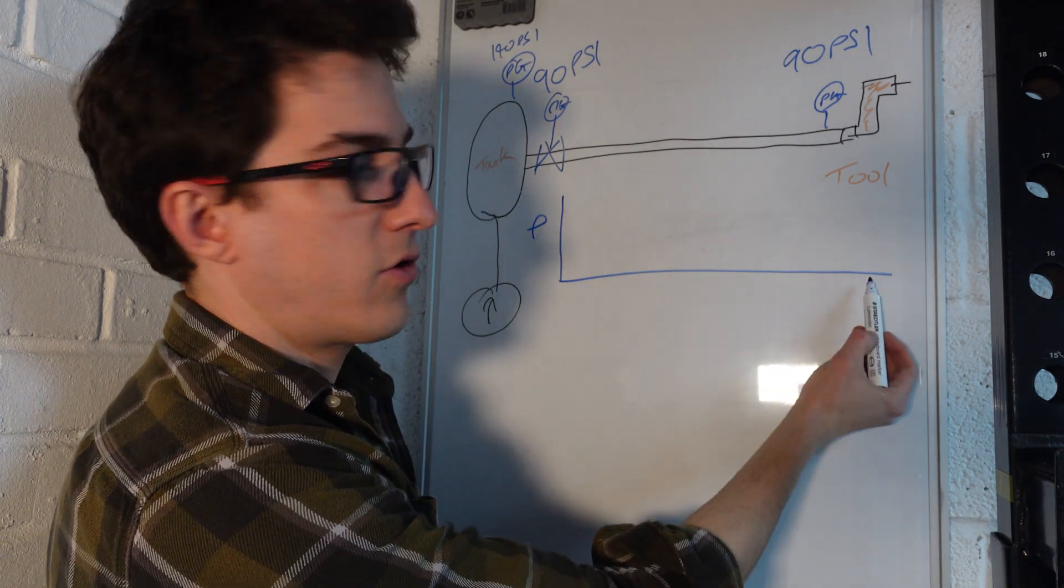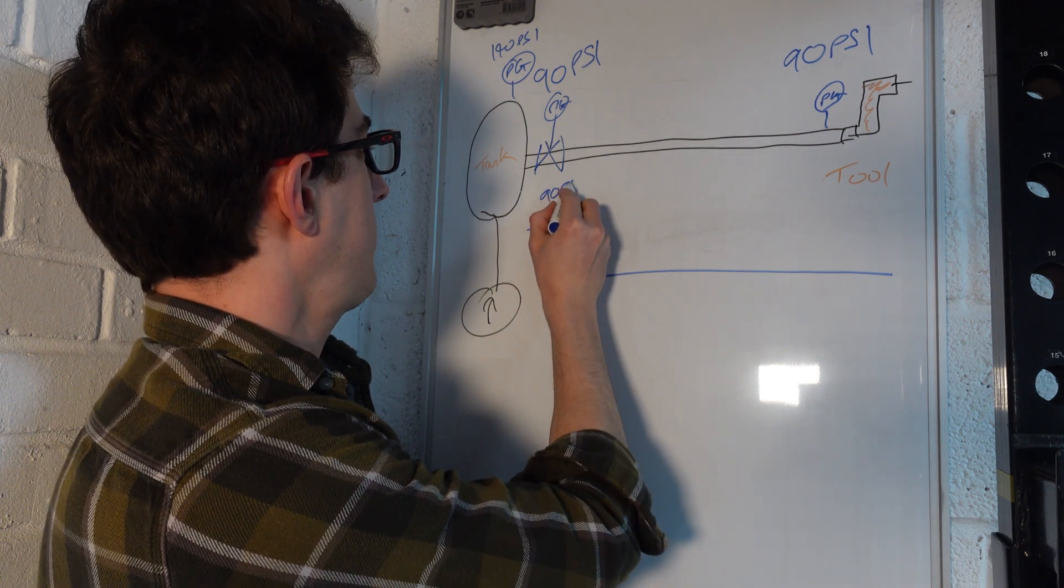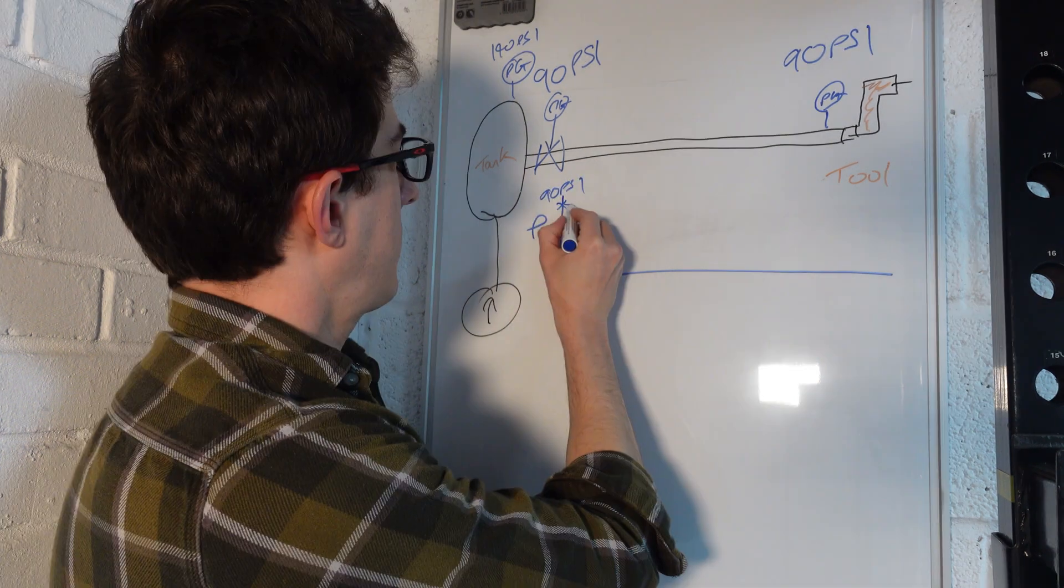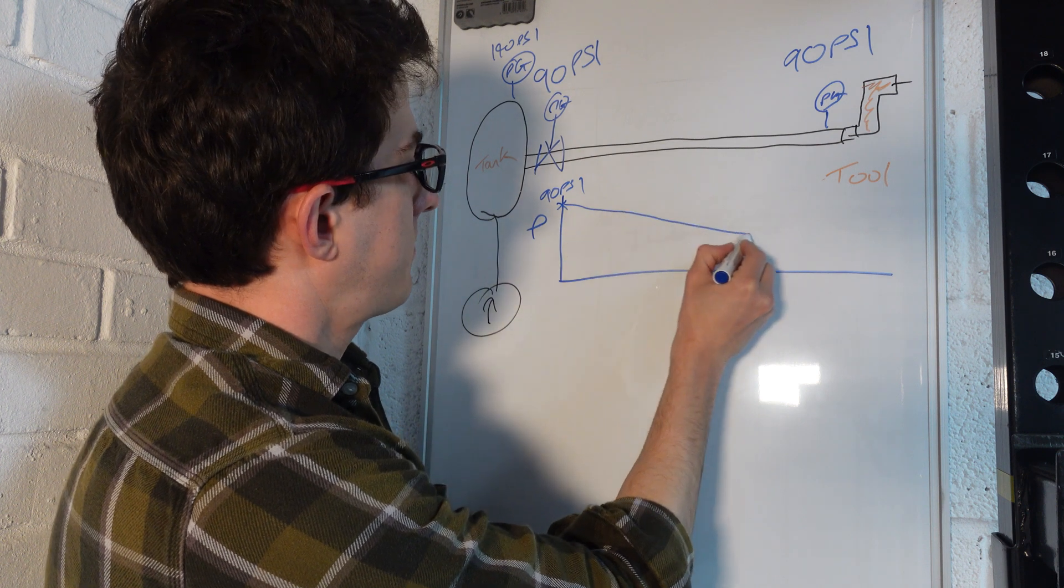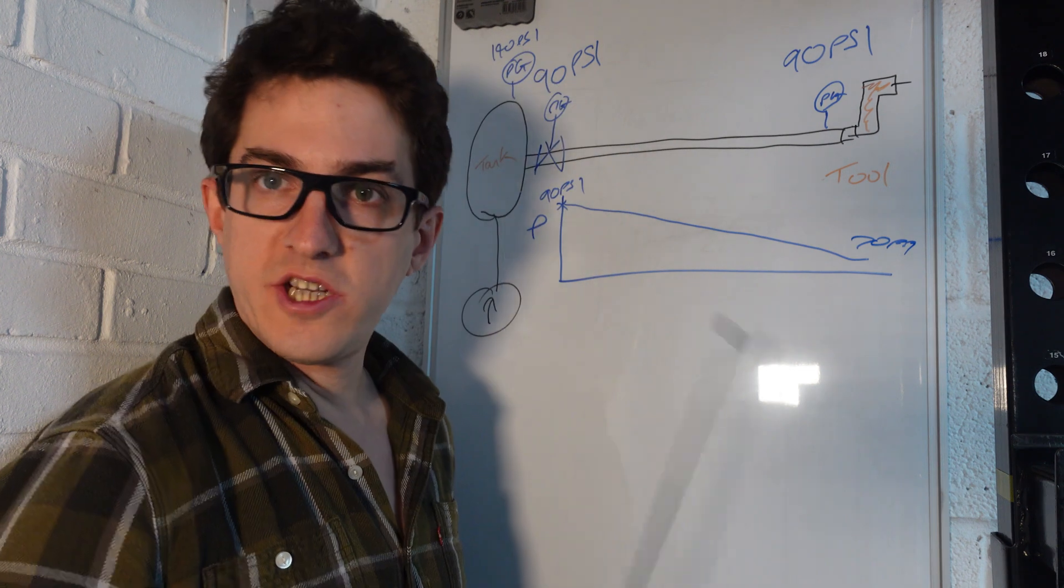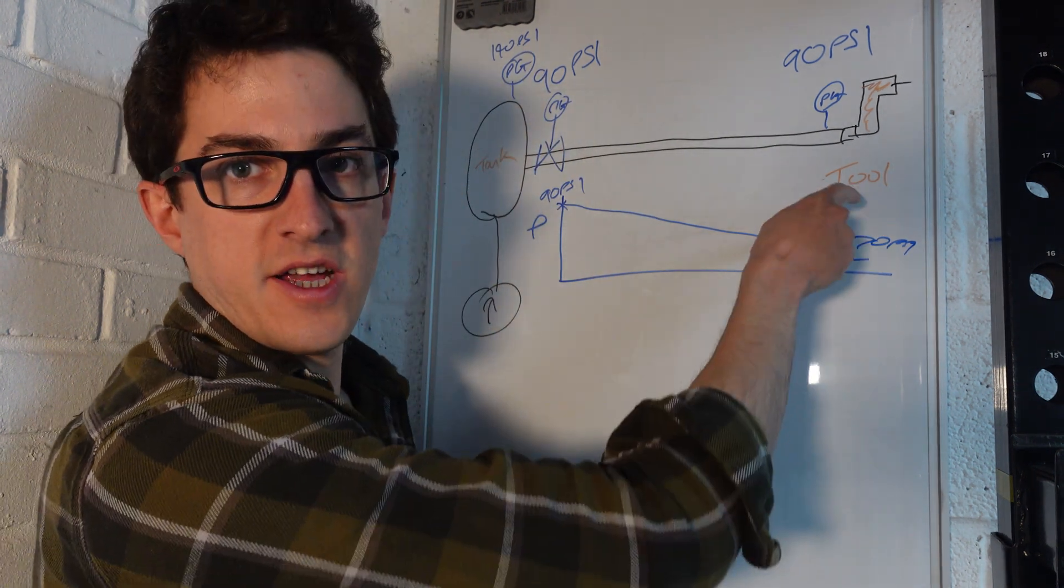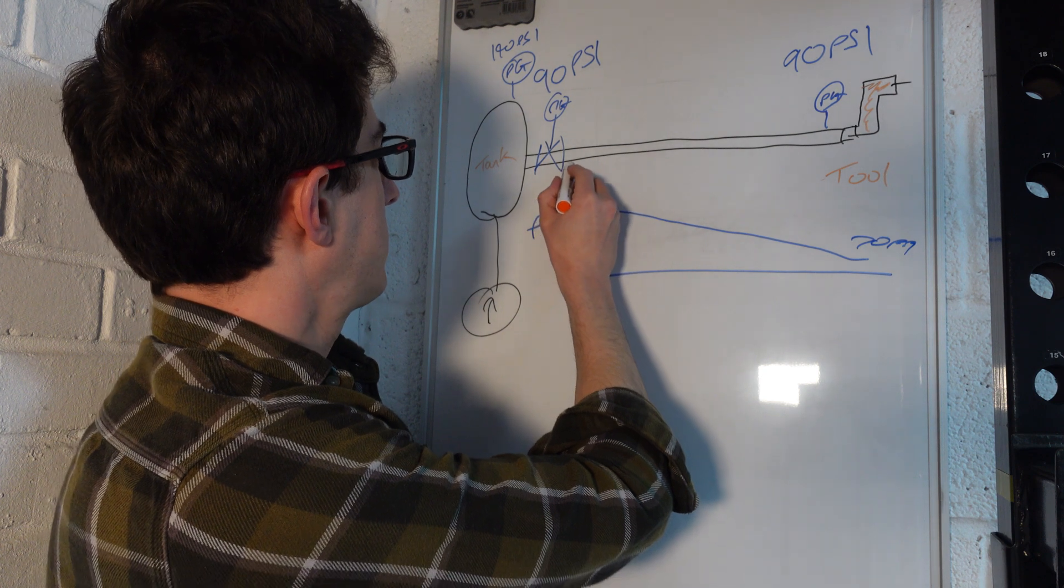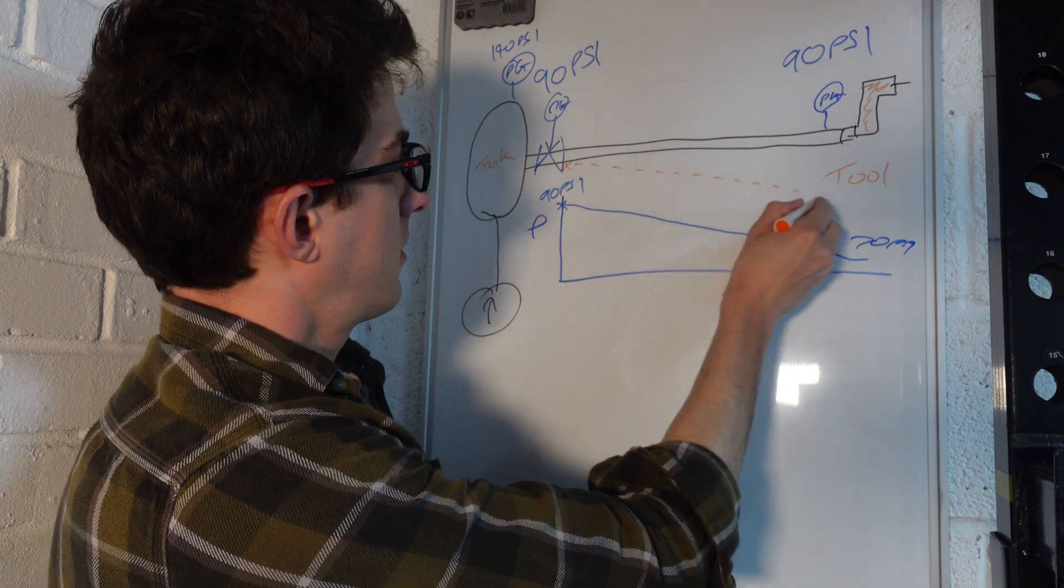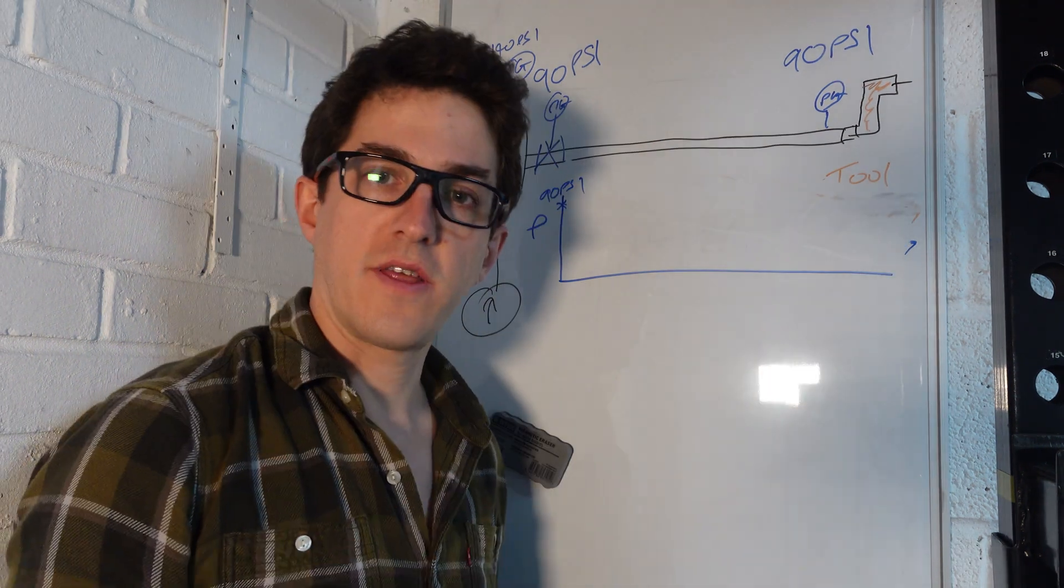Otherwise we're just going to generalize here. If this is your distance along the pipeline and this is your pressure along the pipeline, if we've got 90 psi here at the outlet of the regulating valve, that's going to slowly decrease all the way along. So here you might only have 70 psi, which isn't very good. So in order to get your 90 psi, you're going to need the outlet pressure to be higher in order to get 90 psi at the tool.